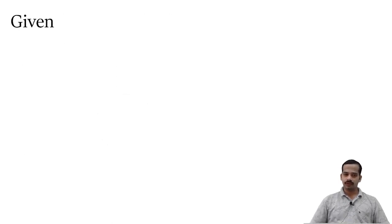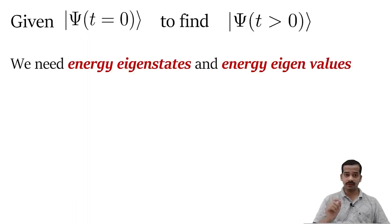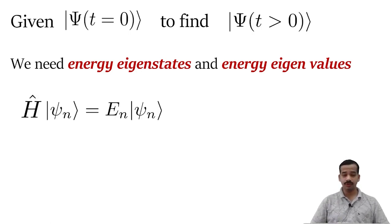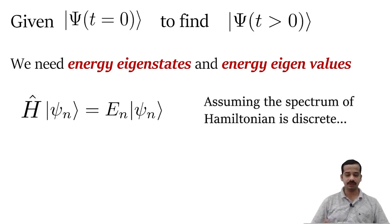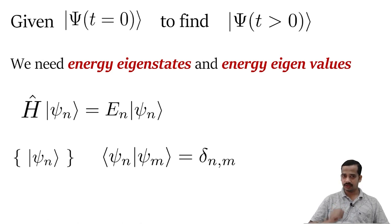Suppose we are given a quantum mechanical state at t equal to 0 and if we wish to find the quantum mechanical state at t greater than 0, the first thing we need is energy eigenstates and energy eigenvalues of the system. That means we should solve the equation H-cap psi-n equals E-n times psi-n, the Hamiltonian eigenvalue equation. If we solve this equation, we get energy eigenstates, which are usually orthogonal to each other. We can normalize these eigenstates and they will follow the orthonormality relation.